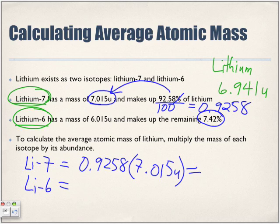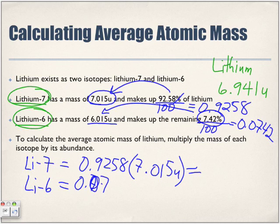You're going to try to find the remaining 7.42% of 6.015 units. So 7.42 divided by 100 equals 0.0742. Remember, percentages we always change to a decimal by dividing by 100, so we get 0.0742 times 6.015.